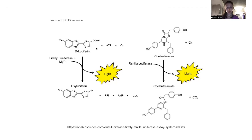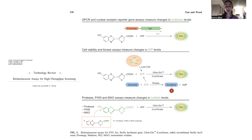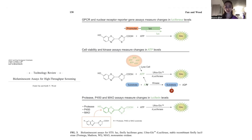Because the firefly luciferase reaction requires ATP, you can actually use it to measure ATP levels. This is helpful for seeing if cells are alive — living cells produce ATP, while dead cells deplete it. You can also use this as a kinase assay: kinases use ATP to phosphorylate substrates by transferring the terminal phosphate from ATP to a protein or other molecule, producing ADP.